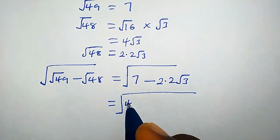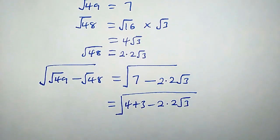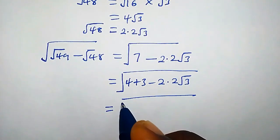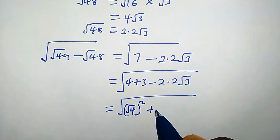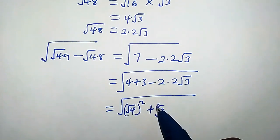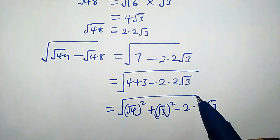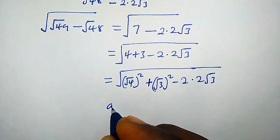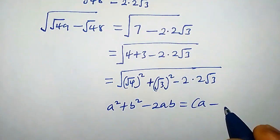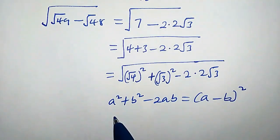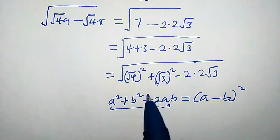This equals square root of — we can write 7 as 4 plus 3 — so we have (4 + 3) minus 2 times 2 times square root of 3. This can be written as (square root of 4)² plus (square root of 3)² minus 2 times 2 times square root of 3. Recall that a² + b² - 2ab is simply (a - b)².